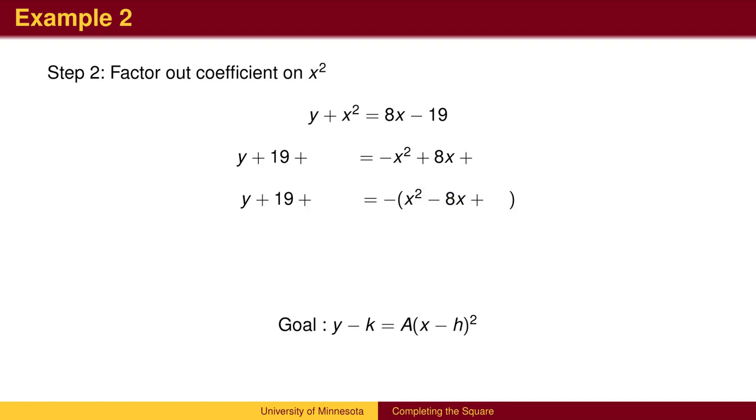We are now ready to complete the square. We need to figure out what square will foil to x-squared minus 8x plus something. We need to cut the 8x into two equal pieces of 4x.